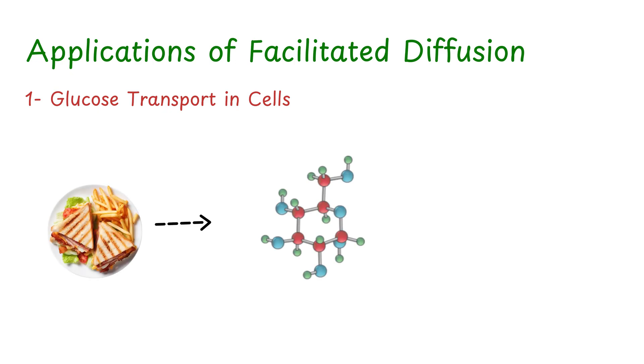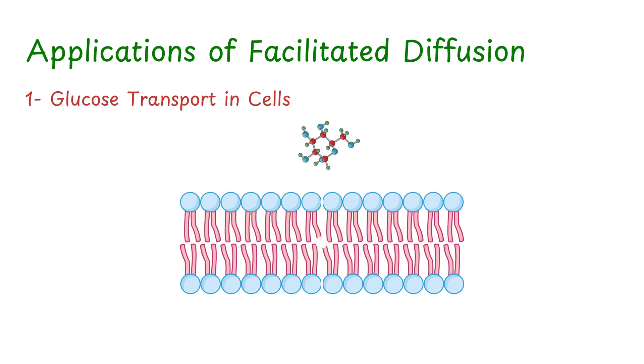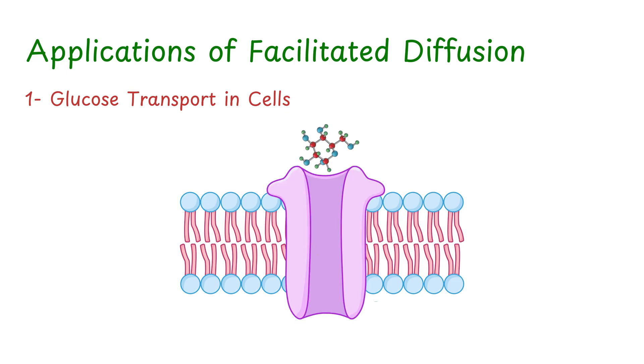First application is simple: glucose transport in cells. After you eat, glucose levels rise in your blood. But glucose is too large and polar to pass through the lipid bilayer. So, cells use a glucose transporter protein to bring glucose inside using facilitated diffusion. This is especially important in muscle and fat cells.